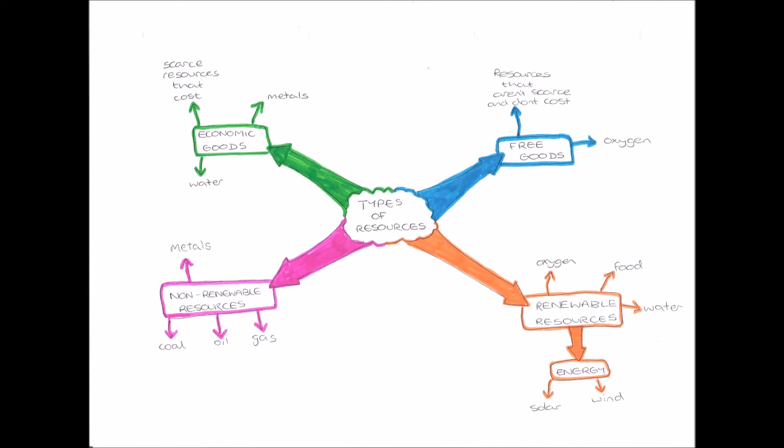Free goods, on the other hand, these are the opposite of economic goods. Free goods are resources that aren't scarce, so they are easy to get hold of. And due to this, they don't cost. An example would be oxygen. Oxygen is all around us all the time. There is enough oxygen for every human being on earth and it's easy for us to obtain, easy for us to get hold of. Therefore, it doesn't cost.